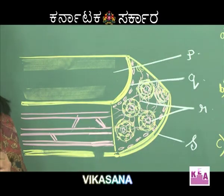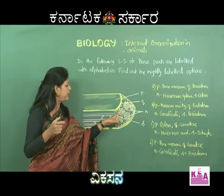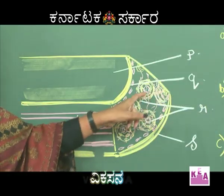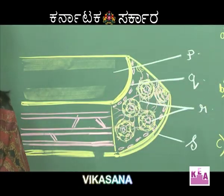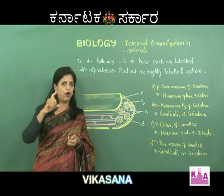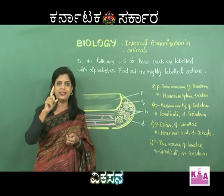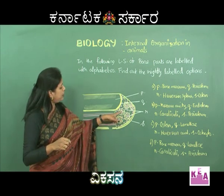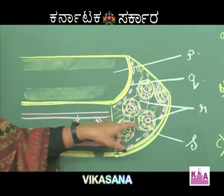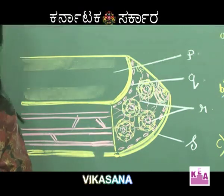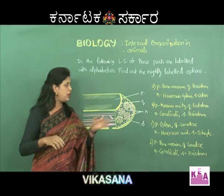In diagrams, normally one haversian system is shown with multiple concentric lamellae - that represents mammalian bone. If only one haversian system is given, it could be a frog bone, which has just one haversian system. In humans there are several haversian systems. From the haversian system diagram you can expect all the parts to be labeled.